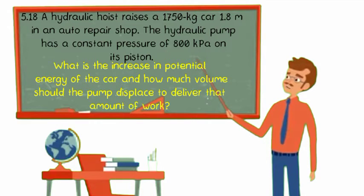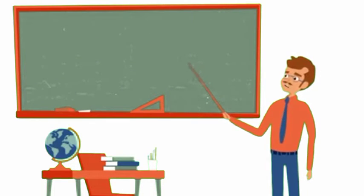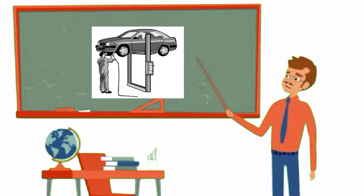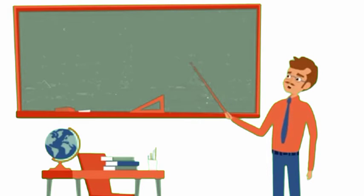So let's find first the increase of potential energy. The formula that we are going to use is potential energy equals mass times gravity times height. As we can see in our problem, the car is raised in the air, so we are expecting that there is an increase of potential energy.